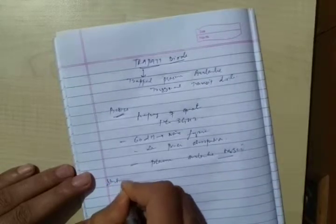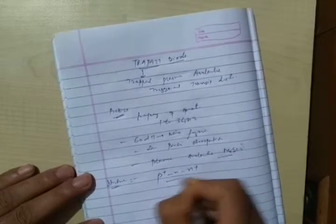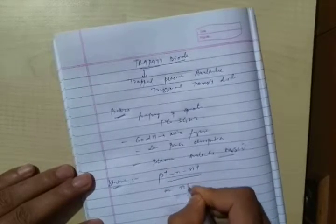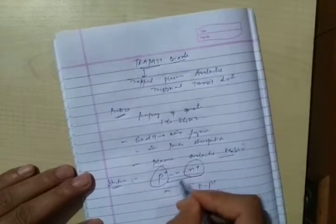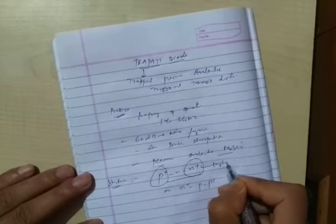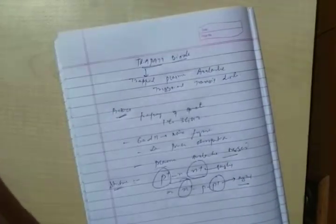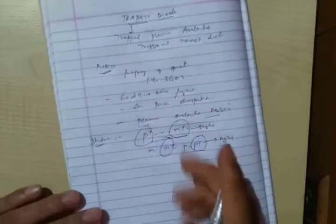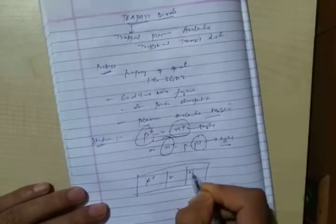Now its structure. It's available in P plus N and N plus, or we can say N plus P P plus. That means P and N is highly doped. For example, I can say P, N and N plus.